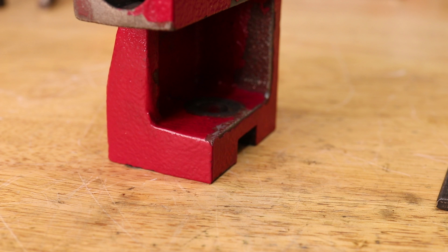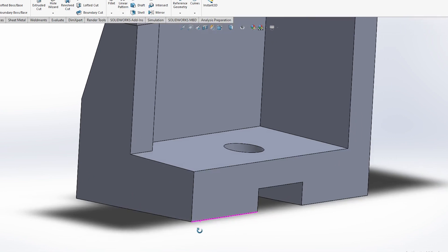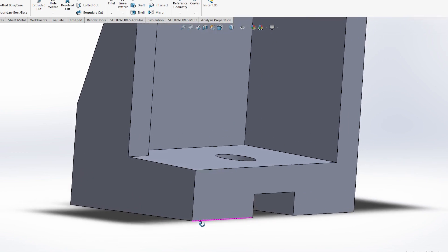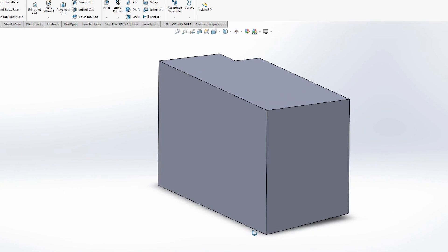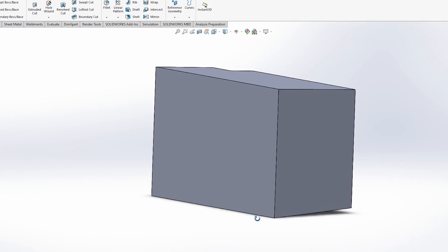Because the part is cast, there are going to be these 3 degree draft angles on each of the sides. Now I could produce an insert with 3 tapered sides, but I think it's a lot easier to mill down the tapers so they're flat.